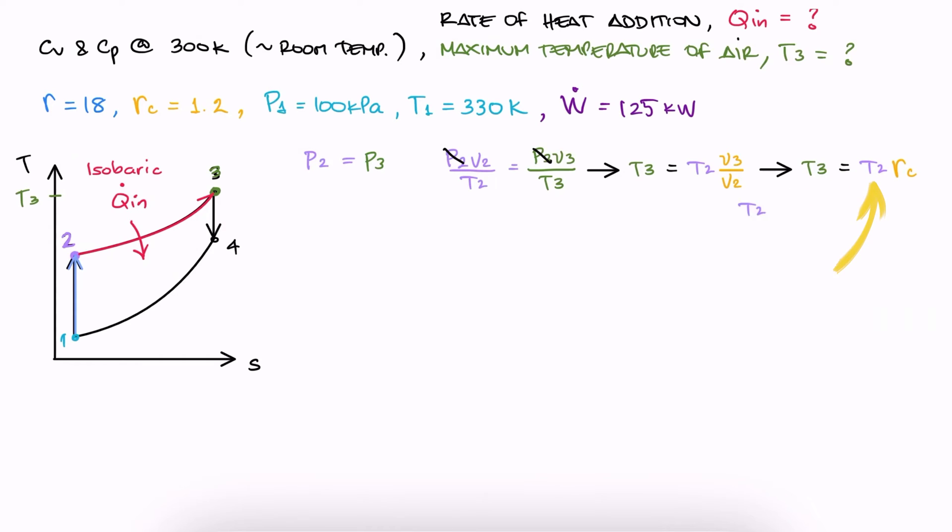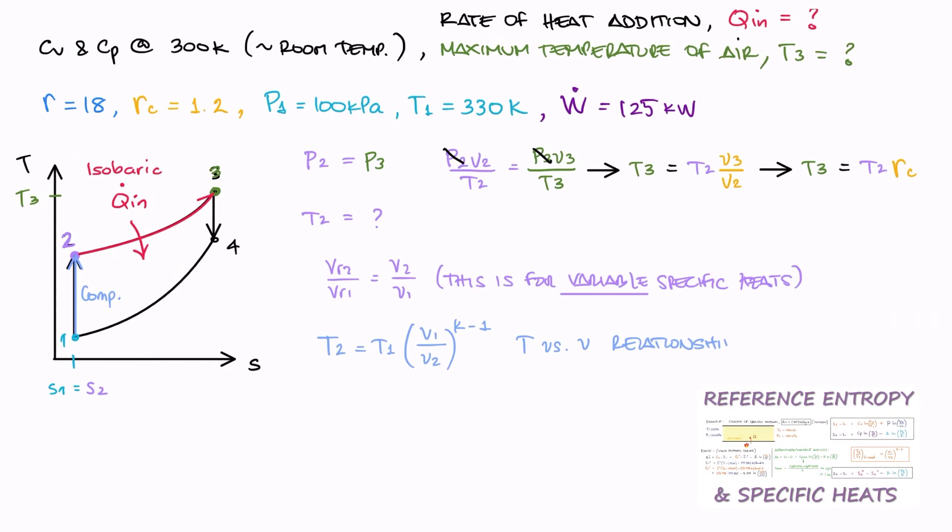To find T2, we can use the fact that the process between 1 and 2 is an isentropic compression. And since the problem asks us to use constant specific heats, we're not going to use the relative volumes.